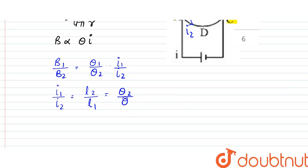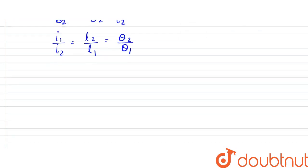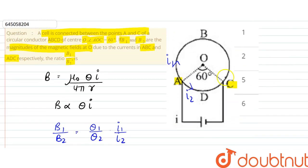Since we can write l1 and l2, l1 and l2 is proportional to theta 1 and theta 2. Why? Because what is theta 1? Theta 1 is 300 and theta 2 is 60 degrees.